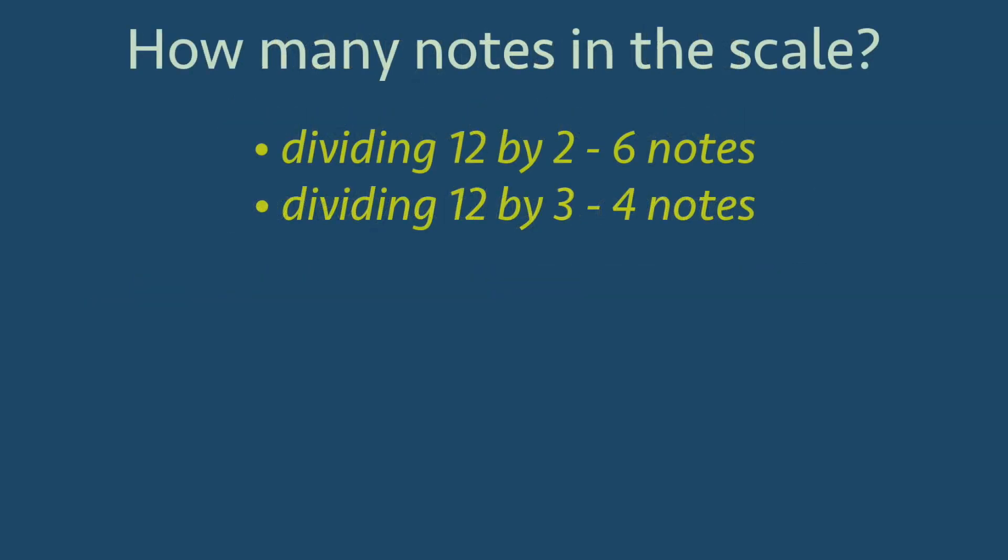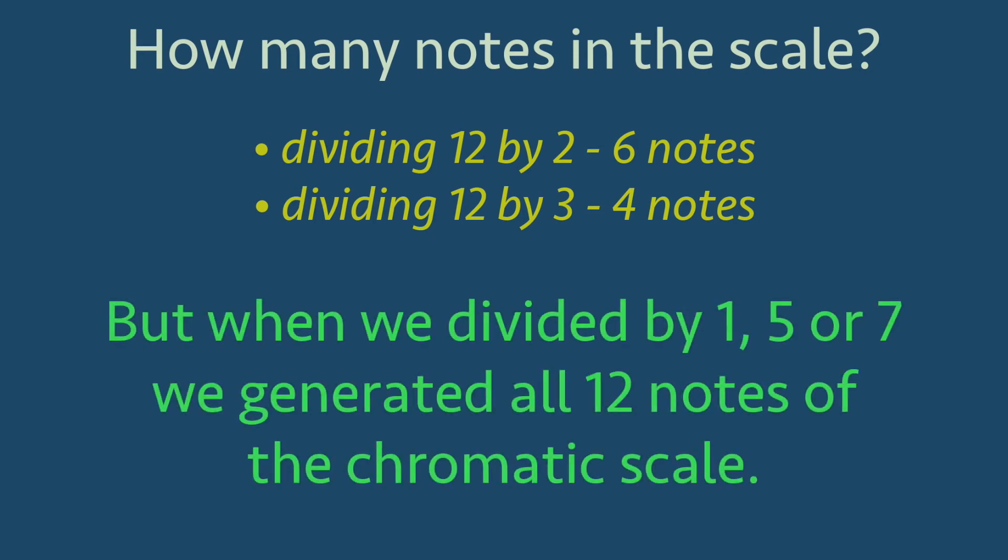Notice that when we repeatedly added 2, we got a scale of 12 divided by 2, or 6 notes. And when we repeatedly added 3, we got a scale of 12 divided by 3, or 4 notes. But when we used the perfect fourth and perfect fifth, we were repeatedly adding 5 and 7, respectively, which do not divide 12 evenly. This is why those intervals generated all 12 tones.